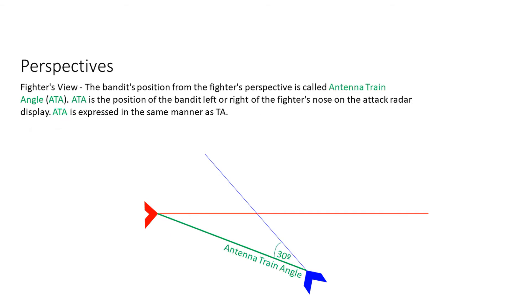Next up we have the fighter's view, which is the antenna train angle. And that's the opposite of the target aspect. That is the perspective from our nose to the bandit.